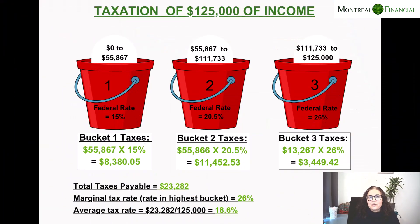The analogy that I like to use in this case is one of buckets. In this example, you can see that I have three buckets and I am going to allocate $125,000 of income. The reason I use $125,000 is so that you can see the application of three different tax brackets.